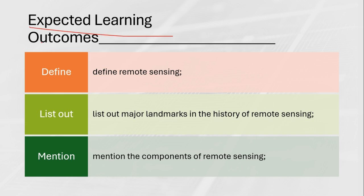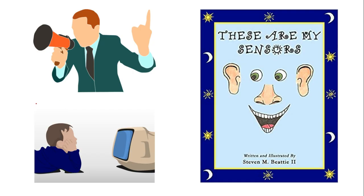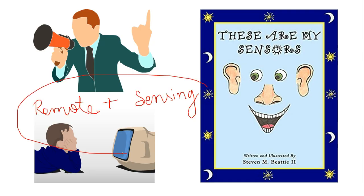The expected learning outcomes from this lecture: we will define remote sensing, learn about different definitions of remote sensing, list out the major landmarks and history about remote sensing, and also learn about the components of remote sensing.